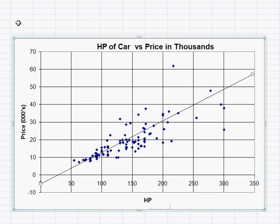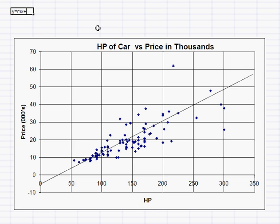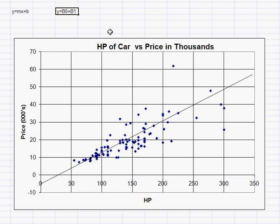What we want to know is exactly what is the equation of that line. As you know, the equation of a line is y = mx + b, where m is the slope, x is horsepower, y is price in thousands, and b is the y-intercept. In econometrics we write this differently: y = b₀ + b₁x, where y is price in thousands, x is horsepower, b₀ is the y-intercept, and b₁ is the slope. It's a slightly different notation.